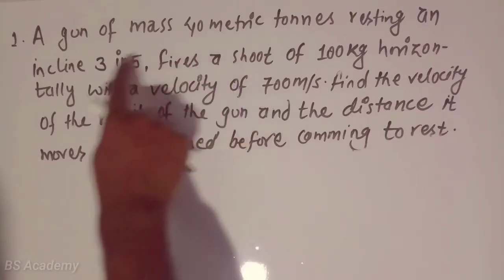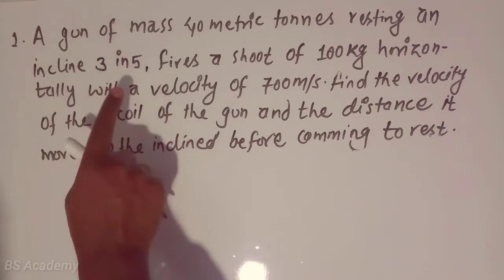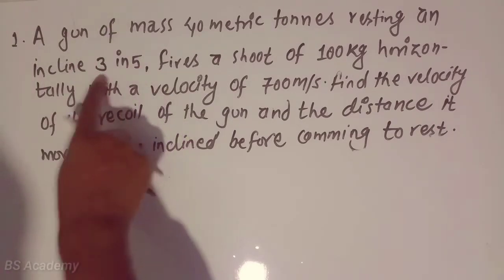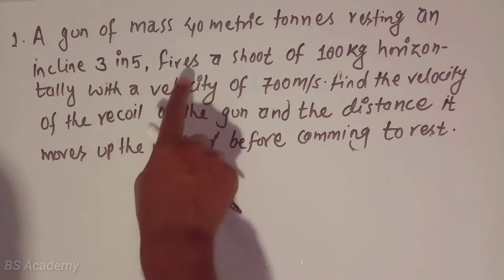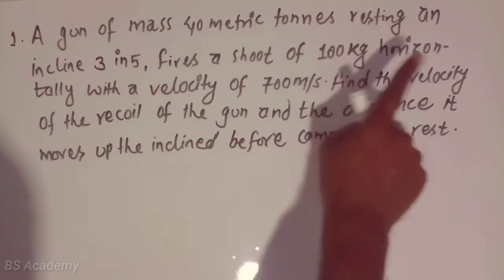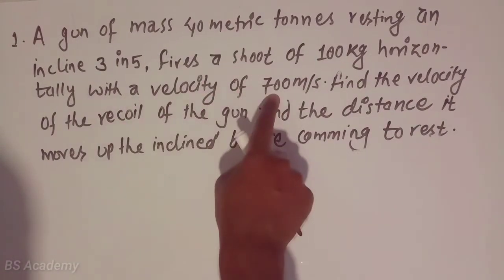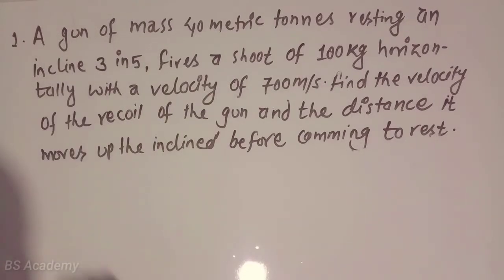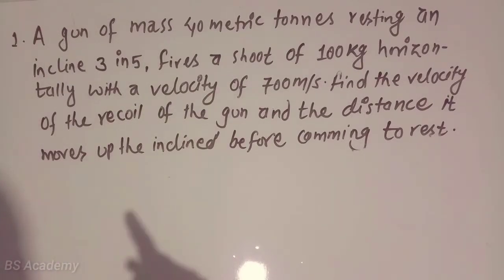In this question, the mass of gun is given which is 40 metric tonnes resting on an incline 3 in 5. This means this is the ratio of inclination with the vertical height. It fires a shot of 100 kg horizontally with a velocity of 700 meters per second.